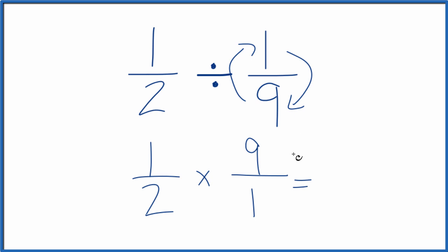Now we just multiply one times nine, that's nine, two times one is two. So one-half divided by one-ninth, that's nine seconds, or nine over two.